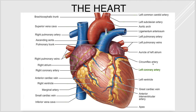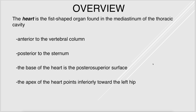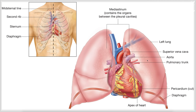Then we started talking about the heart. The heart is found in the mediastinum and the pericardial cavity. It's anterior to the vertebral column and posterior to the sternum — it's very well protected. The base of the heart is on the posterior superior surface, so it's more towards the head and towards the back, and the apex points right towards the left hip. You can see it sits right between the lungs.